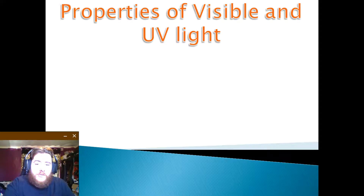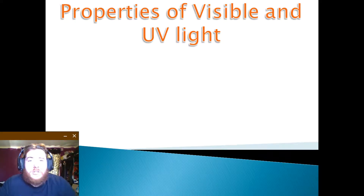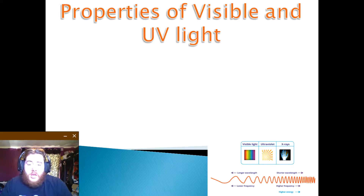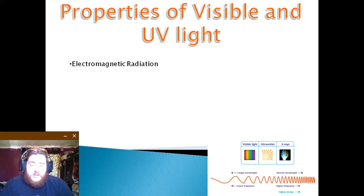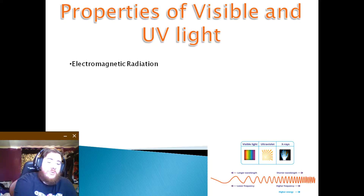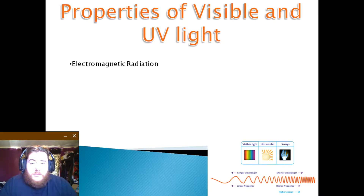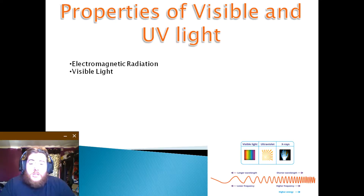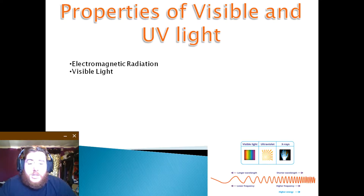First of all, I will look at the properties of visible and UV light. Both ultraviolet and visible light are electromagnetic radiation. The only real difference between them is the frequency and wavelength, though this does carry a lot of different properties within them. Visible light is just one small band of electromagnetic radiation.